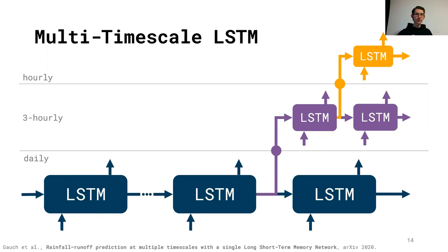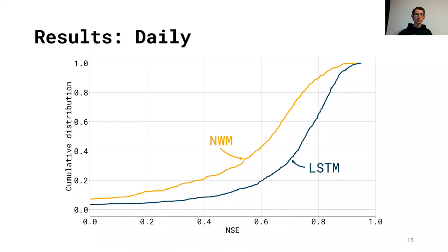Okay, so this is the architecture. Now let's skip ahead to some results, starting with the daily results on daily predictions. What you see here is the cumulative distribution of Nash-Sutcliffe efficiencies. Our study uses a benchmark on the CAMELS US dataset, so this is about 500 basins across the United States. Our two baselines that you see here are in orange, the US National Water Model, which is a process-based model that's actually in production in the United States, operationally used. And the blue model is the naive daily LSTM, so no multi-timescale, simply predicting daily values.